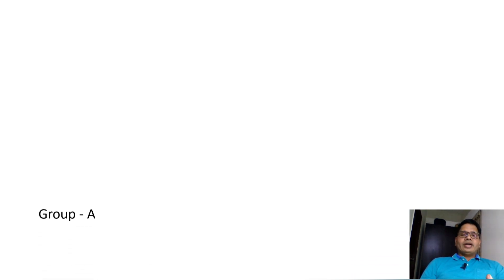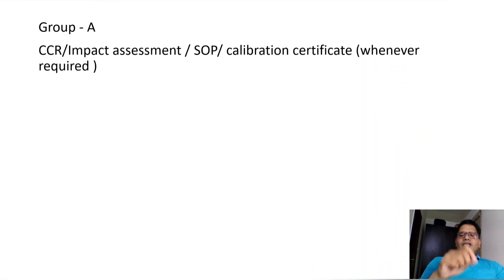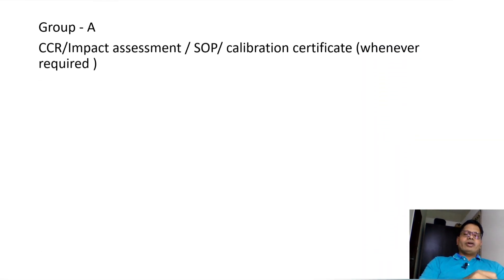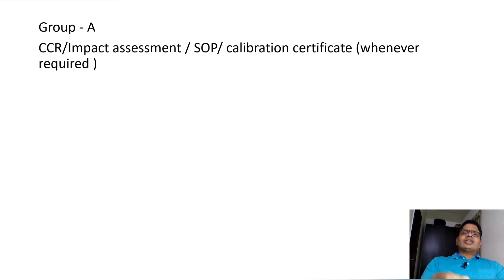Based on the impact assessment, you decide whether the instrument falls in Group A, Group B, or Group C category. For Group A, the required qualification documents are: change control, impact assessment to identify the group, a standard operating procedure, and if calibration is required, attach the calibration certificate. That is all the qualification required for a Group A instrument.